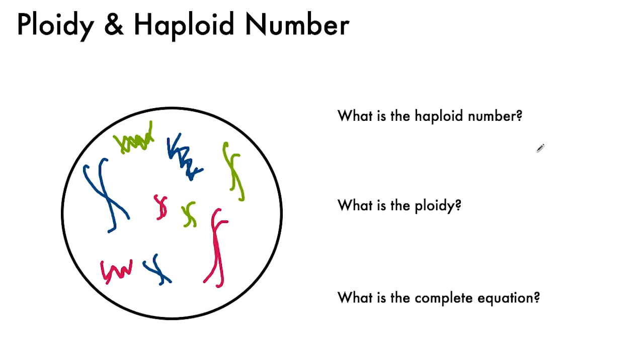So now we have that same cell, but these chromosomes are replicated. And this is important distinction to make because you might think that all these numbers and this complete equation are completely different. But they're not, and I'll explain why.